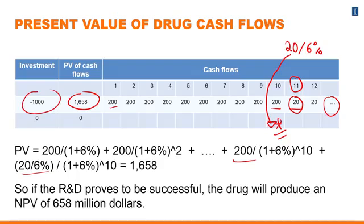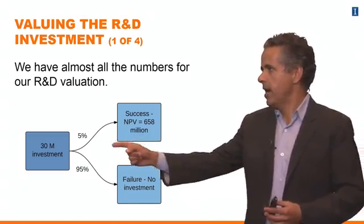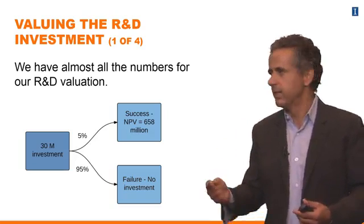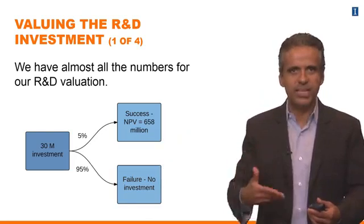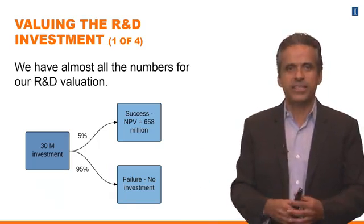You are investing 1 billion dollars, so if the R&D is successful and the drug is developed, we are estimating — forecasting, guessing — that there's going to be an NPV of 658 million dollars. We can now go back and add that to our decision tree: if you invest 30 million, there is a 5% chance of generating an NPV of 658 million dollars, and a 95% chance of getting nothing.